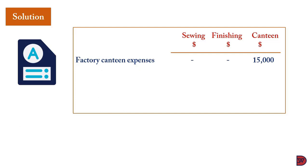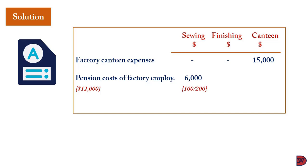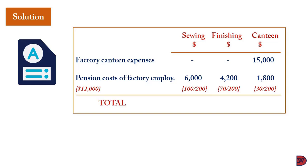Factory canteen expenses are attributed entirely to the canteen department, with nothing for sewing or finishing. For pension cost of factory employees, we use number of employees: sewing 100, finishing 70, canteen 30 — summing to 200. So sewing gets 100/200 × $12,000 = $6,000; finishing gets 70/200 × $12,000 = $4,200; canteen gets 30/200 × $12,000 = $1,800.